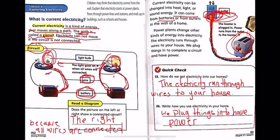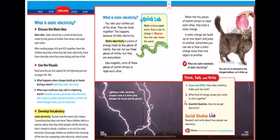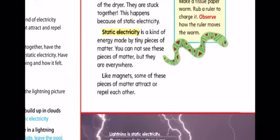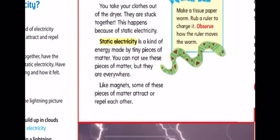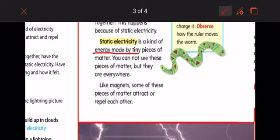Let's move on. What is static electricity? Static electricity is a kind of energy made by tiny bits of matter. You cannot see these pieces of matter, but they are everywhere. Like magnets, some of these pieces of matter attract and repel each other.